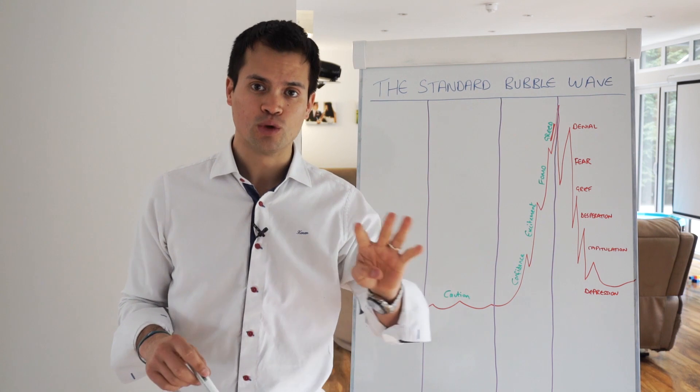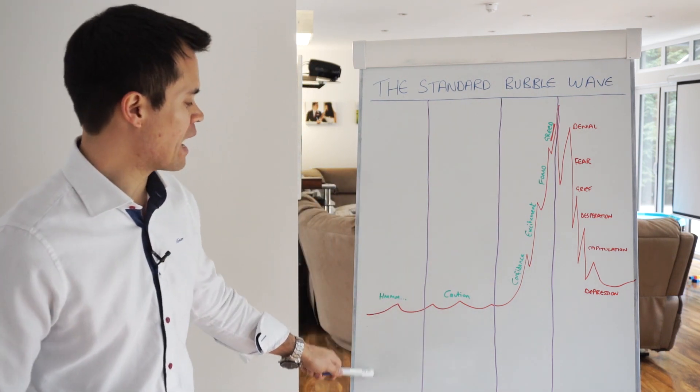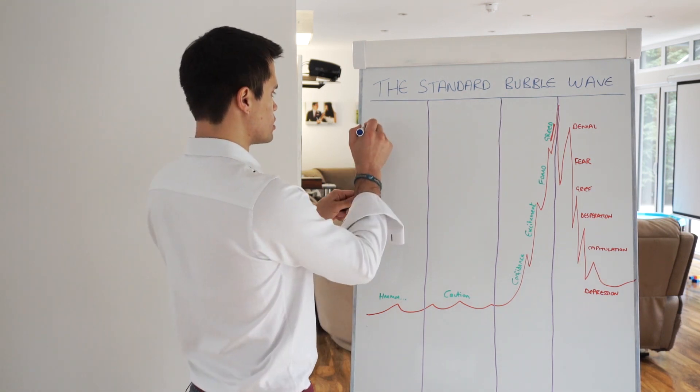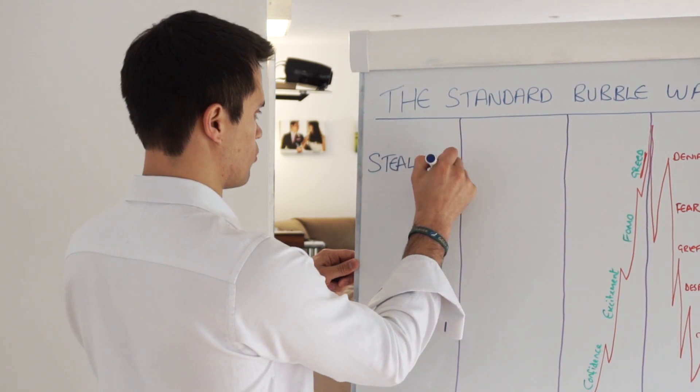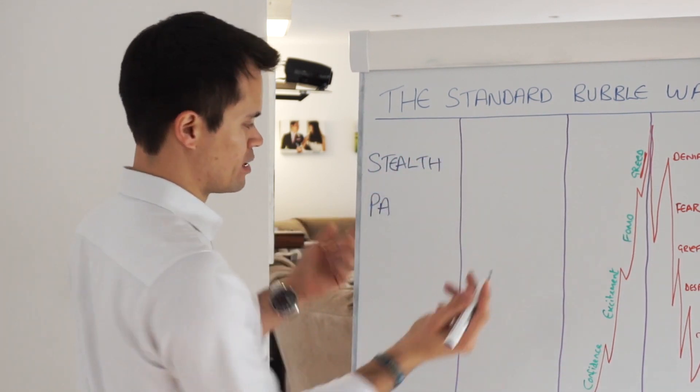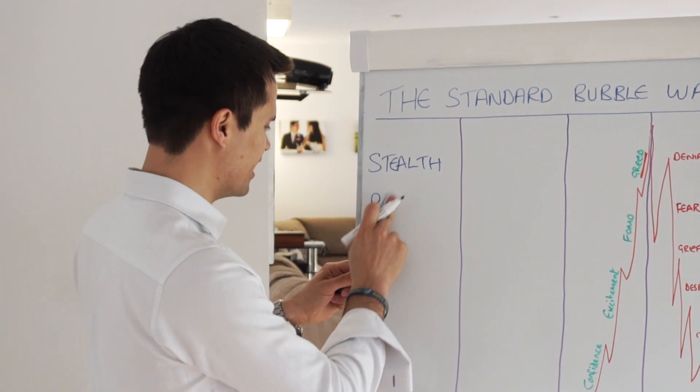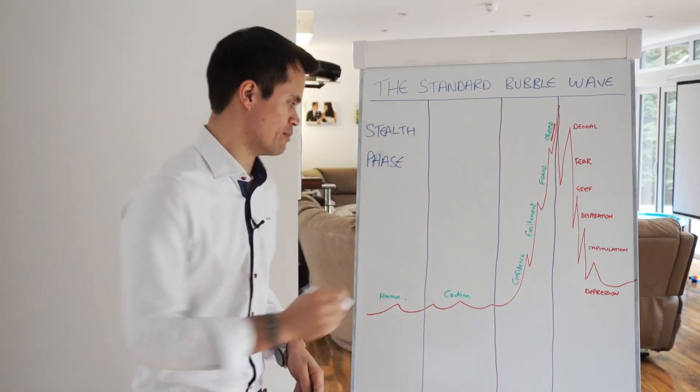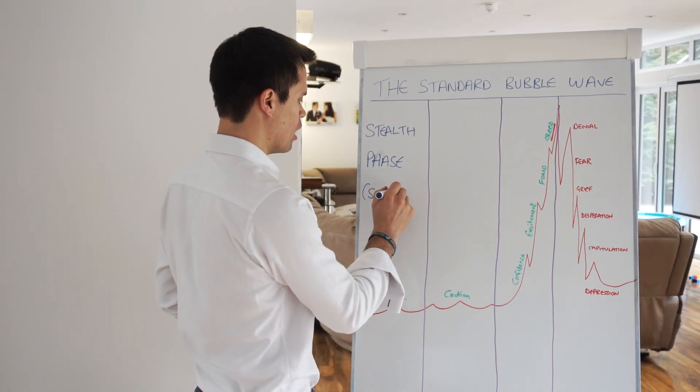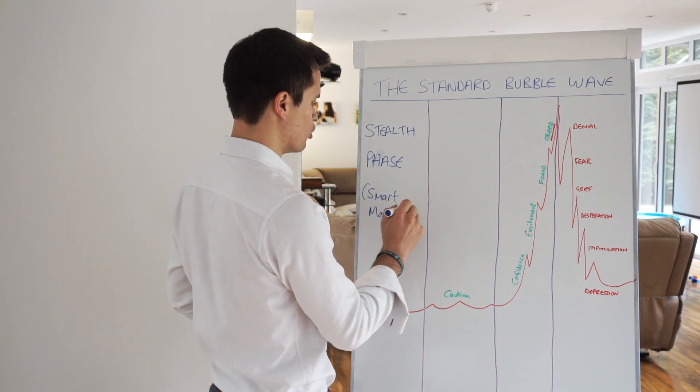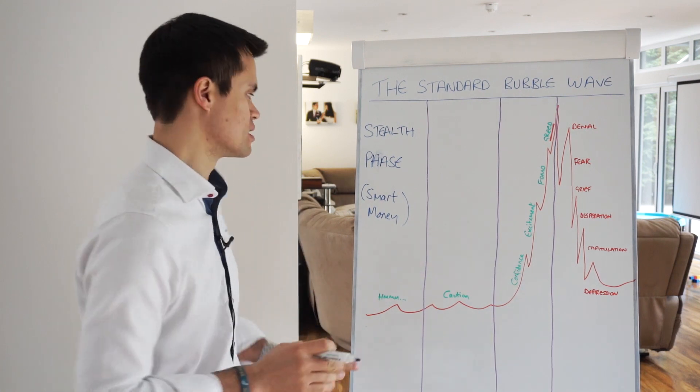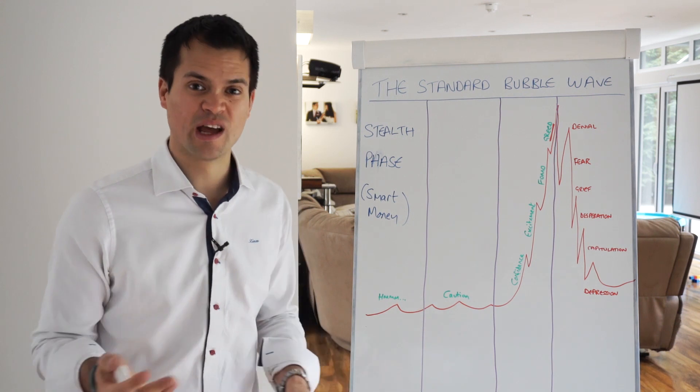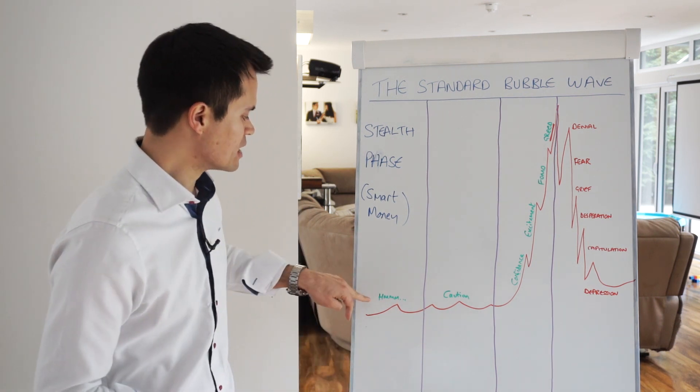There are four main stages to the standard bubble wave. First of all, you have what is called the stealth phase. This is where the smart money, the really smart money like the billionaires out there, the people who have better information than the rest of us, get access or get a heads up about a certain asset class or investment vehicle of some sort. The general reaction is, hmm, interesting, we'll have a little play with it.